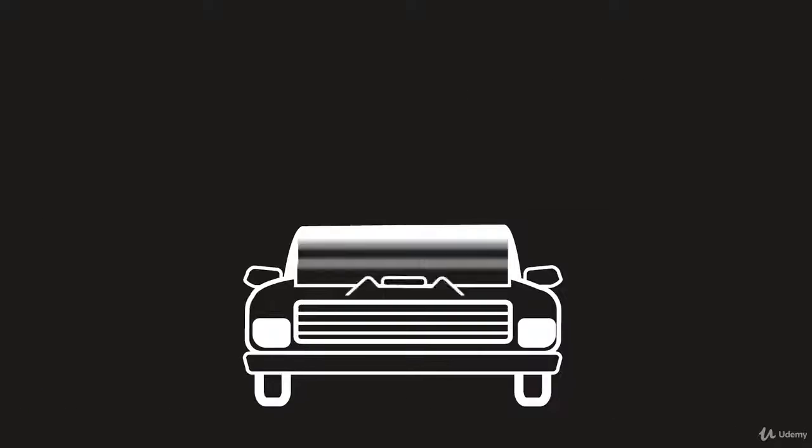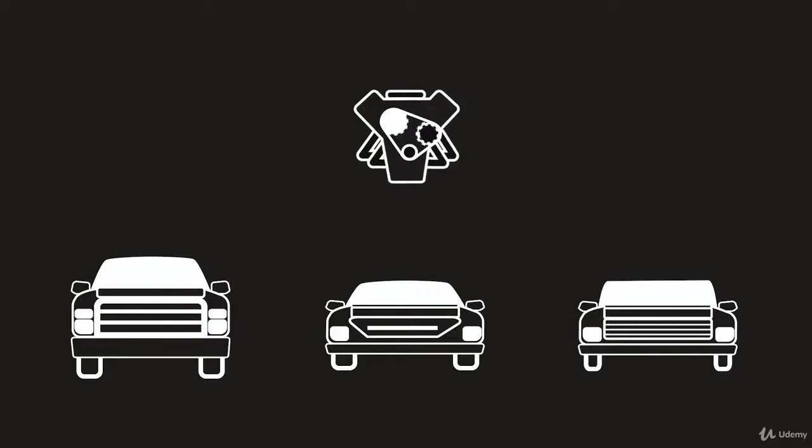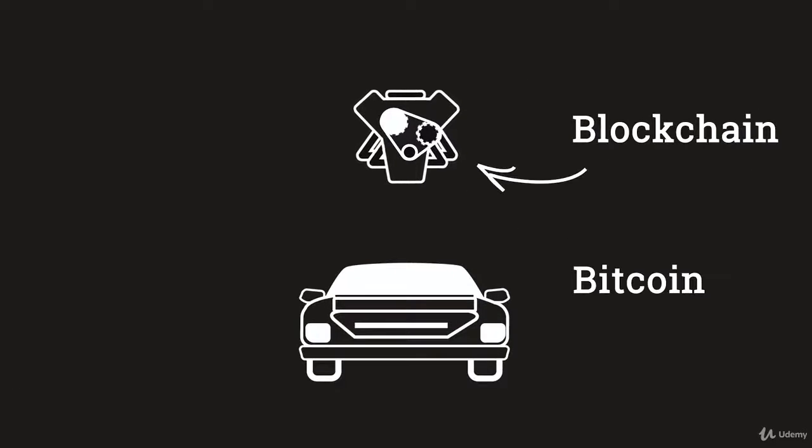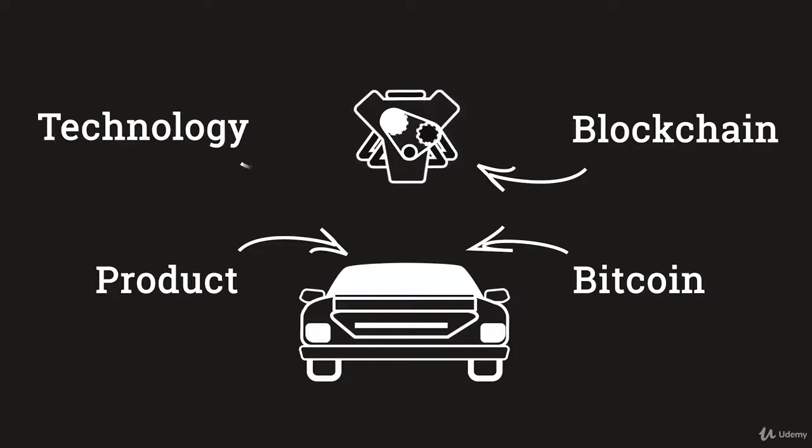Bitcoin is the product, blockchain is the technology. I want to say this again: Bitcoin and blockchain are independent of each other. Why do you care? Because it means that when you hear a company saying they're implementing blockchain technology, it doesn't mean you should run out and buy some Bitcoin because it shouldn't affect the price of Bitcoin.